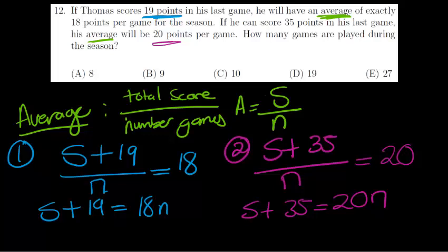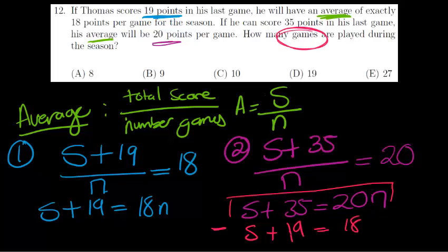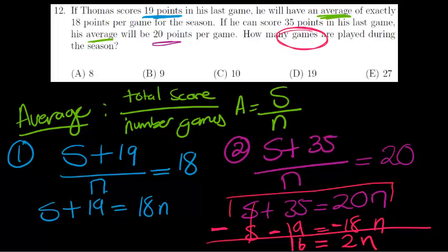The question is how many games did he play — we're solving for N. I'm going to subtract the two equations: S plus 35 equals 20N, minus S plus 19 equals 18N. S minus S is 0; 35 minus 19 is 16; 20N minus 18N is 2N. So 16 equals 2N, divide both sides by 2, and N equals 8. He played 8 games. My answer is A.